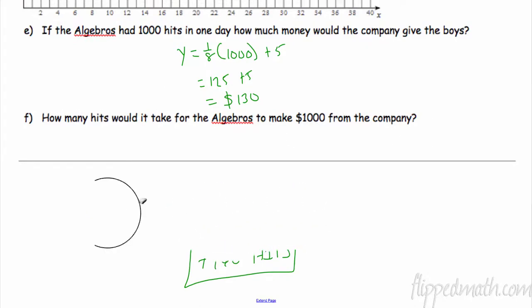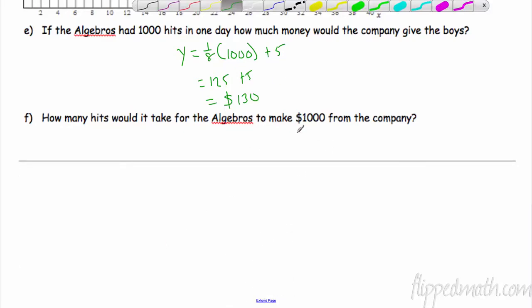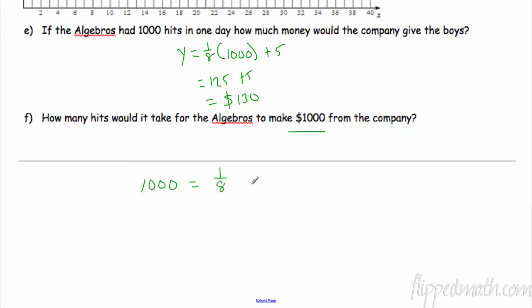Let's see if I can work it out again. So now I want to make a thousand dollars, so that's on my y. So y equals 1/8 x plus 5. Subtract 5, I get 995. The opposite of multiplying by 1/8 is divide by 1/8, or multiply by the reciprocal 8 over 1. So I'm just going to multiply this by 8. So 995 times 8 is 7,960 hits.